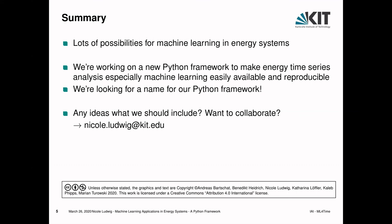Yixing asks whether Nicole has tried using machine learning to solve economic dispatch or optimal power flow problems in power systems. Nicole responds that they haven't yet, but they have been working on optimal power flow with probabilistic inputs and are using machine learning for that — though it's still work in progress, so she can't say yet how well it works.